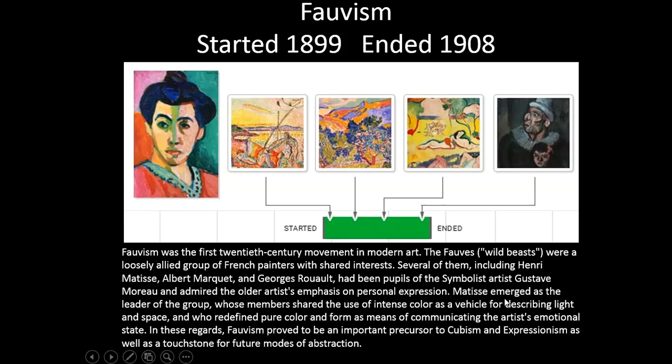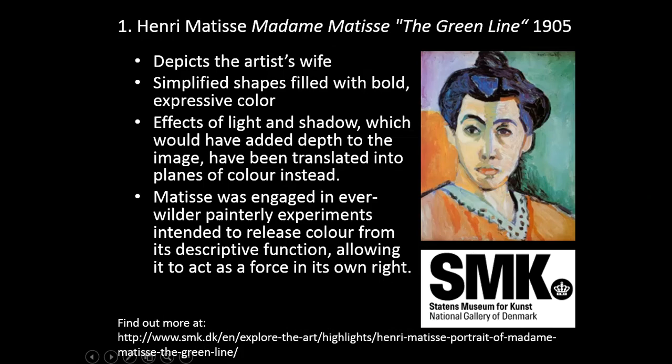Matisse emerged as the leader of the group, whose members shared the use of intense color as a vehicle for describing light and space, and who redefined pure color and form as means of communicating the artist's emotional state. Fauvism proved to be an important precursor to Cubism and Expressionism, as well as a touchstone for future modes of abstraction.